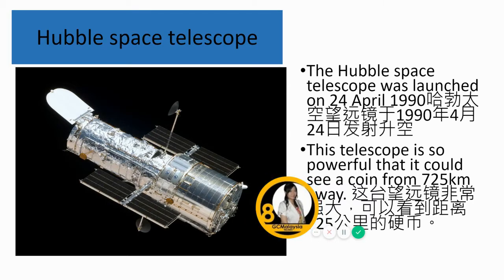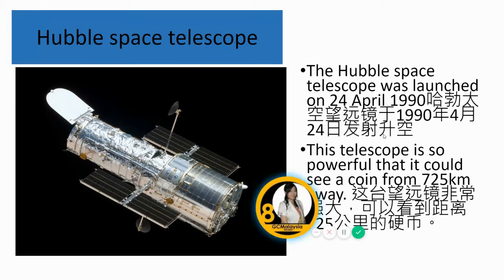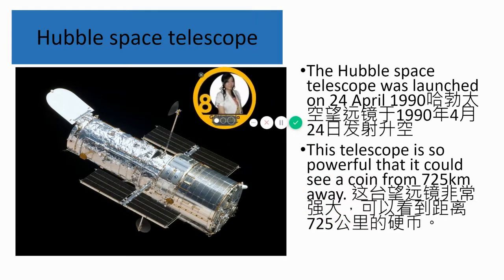There are many types of telescope. One of the famous telescopes is the Hubble Space Telescope, which was launched on April 24, 1990. The Hubble Space Telescope is so powerful that it could see a coin from 725 kilometers away.